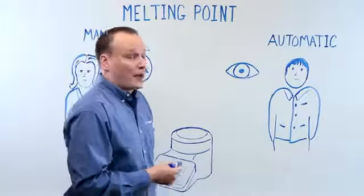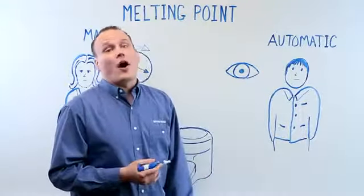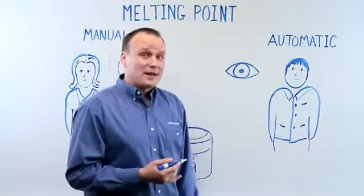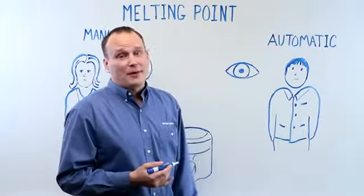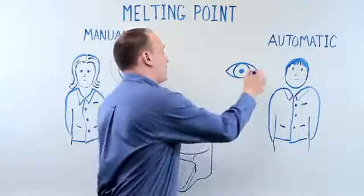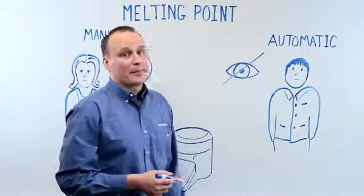Here's Bob. Bob runs lots of samples on his automatic instrument, which saves him time and removes operator bias, but it prevents him from visually verifying the melting process.